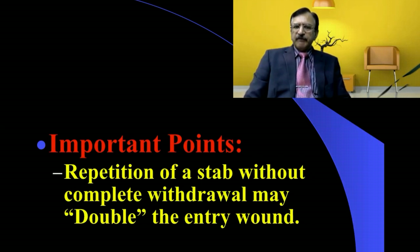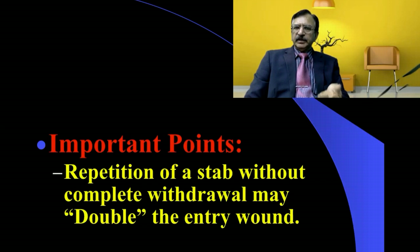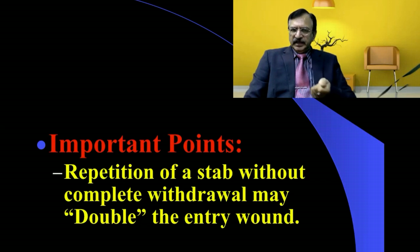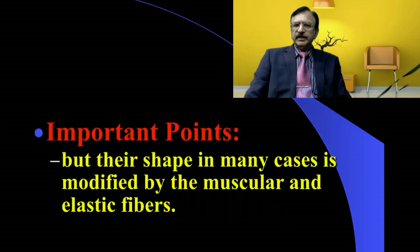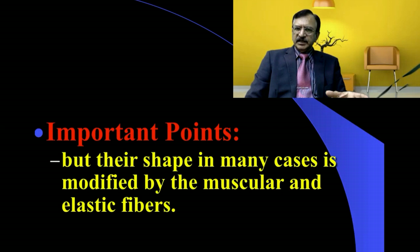Similarly, the repetition of a stab without complete withdrawal may double the entry wound — that is, the assailant partially withdraws and again thrusts in, which may cause a double entry wound. The wounds of internal viscera correspond to the type of penetrative object used usually, but their shape in many cases is modified because of the muscular and elastic fibers in the capsule of the internal viscera.